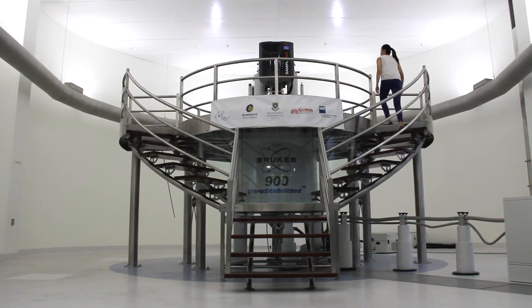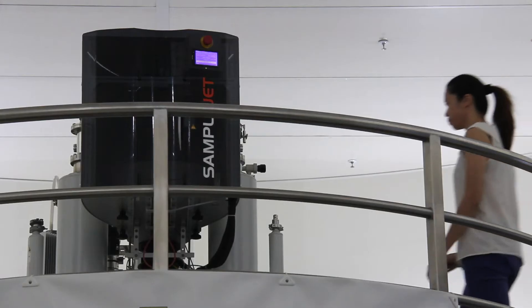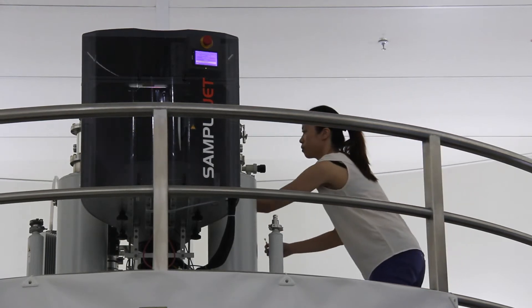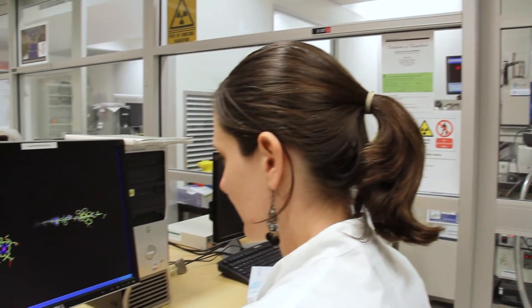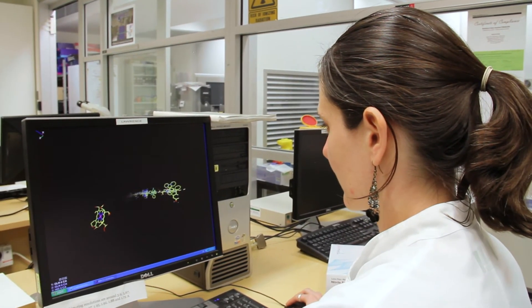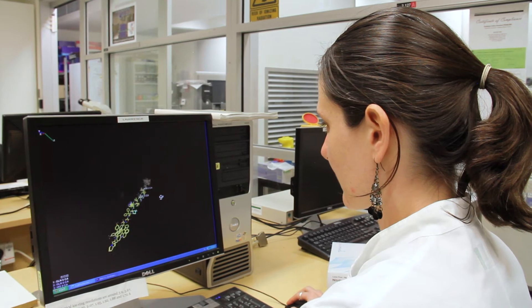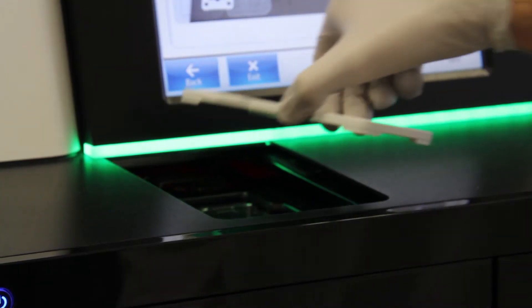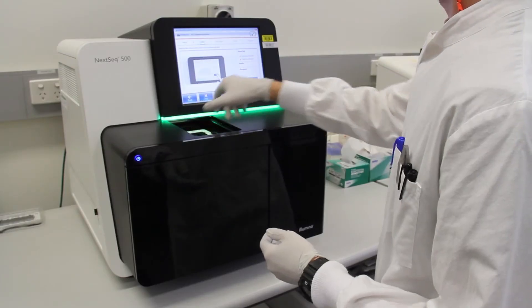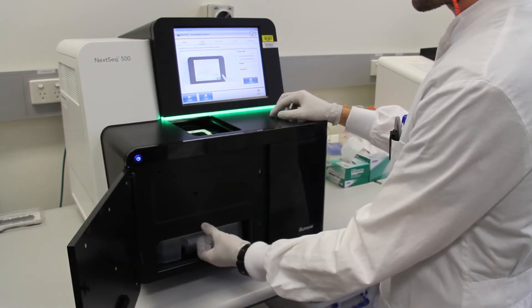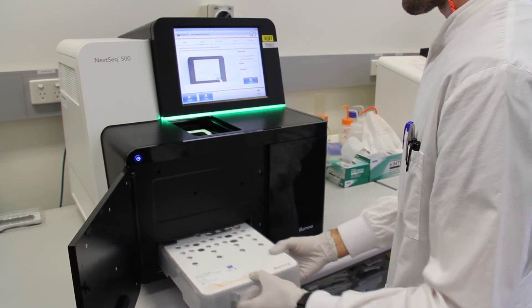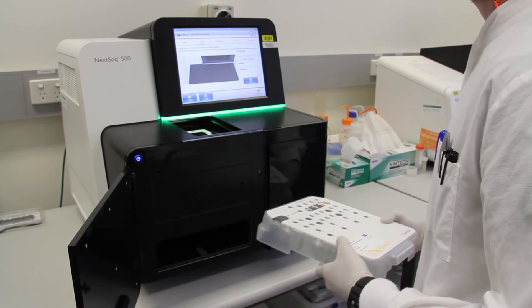We also use nuclear magnetic resonance spectroscopy and X-ray crystallography to determine the three-dimensional structure of drugs and insecticides and examine the way in which they interact with ion channels. A wide range of proteomic and genomic techniques are also utilized for obtaining a holistic understanding of animal venoms and the mechanisms by which they evolved.